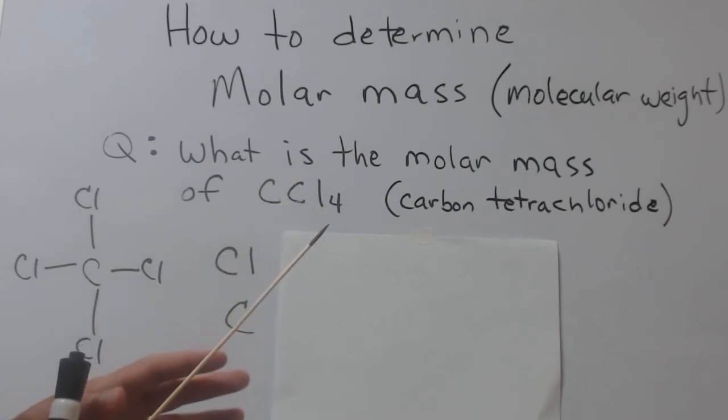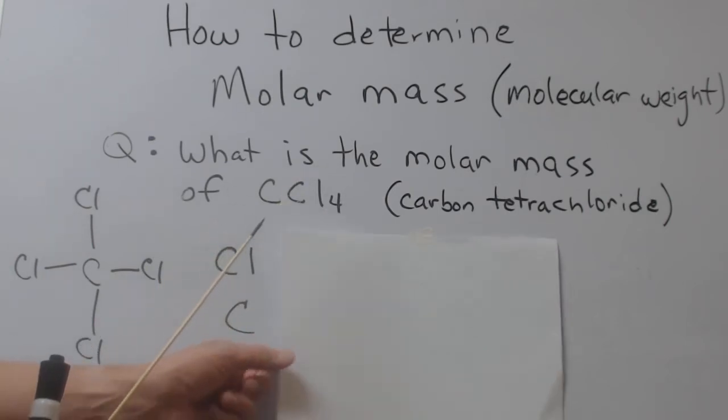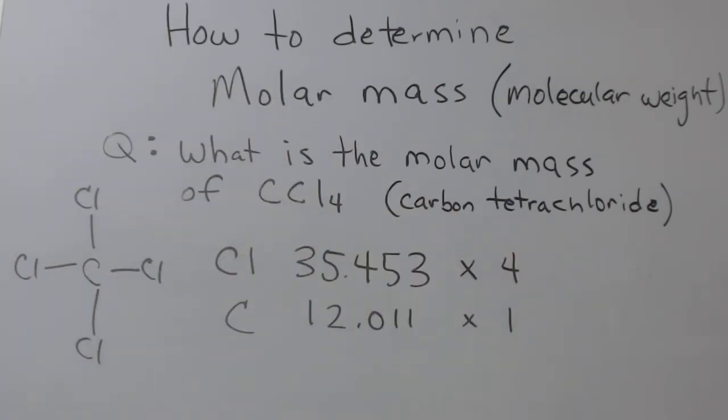Let's tackle the problem. As you might have guessed, we do need the atomic masses of each element involved. In this particular case, chlorine has an atomic mass of 35.453. As you can see here, we get that from the periodic table.